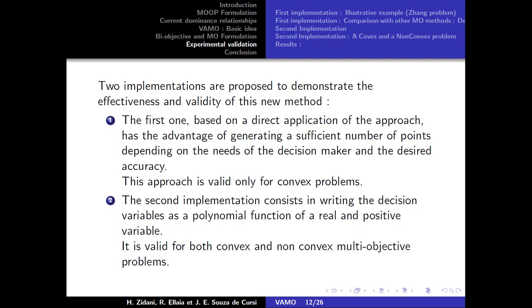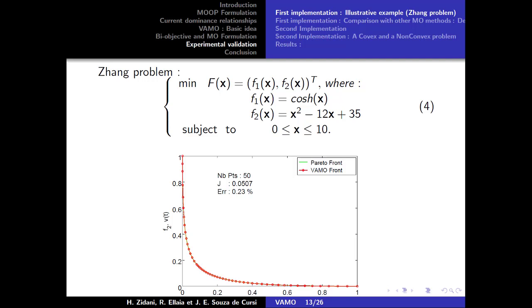The second implementation consists in writing the decision variables as a polynomial function of a real and positive variable. It is valid for both convex and non-convex multi-objective problems.